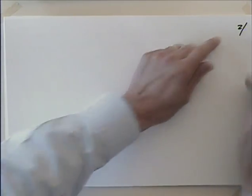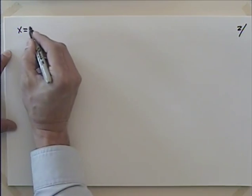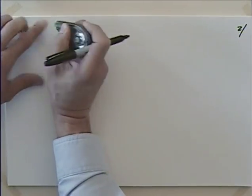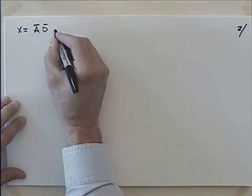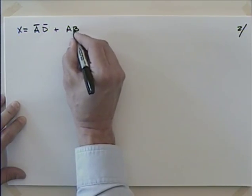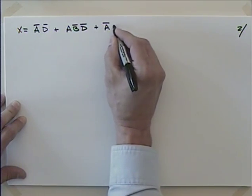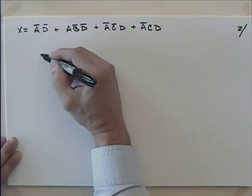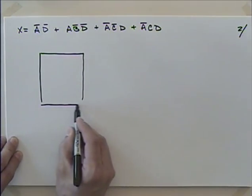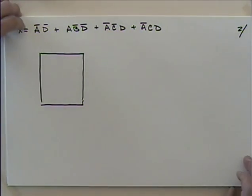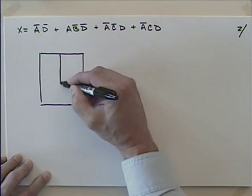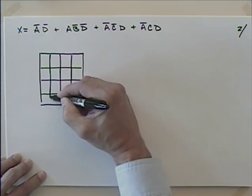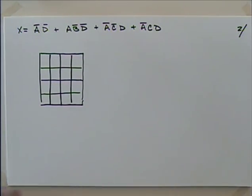Let's try a couple more. Say that we are given: not-A not-D, or A not-B not-D, or not-A not-C D, or not-A. Let's see if we can simplify that using a Karnaugh map. We've mainly done four-input Karnaugh maps, though we talked about two-input and three-input as well. You can do multiple inputs — more than four means you lay the Karnaugh maps one on top of the other and look in the third dimension, but we won't be doing that here.